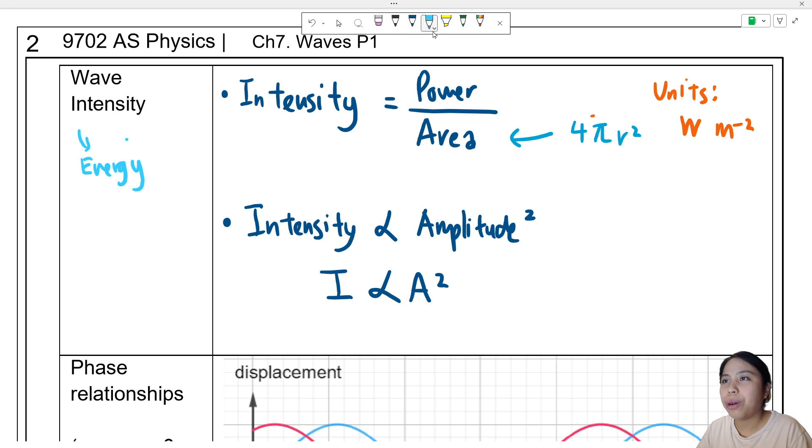So in other words, if we were to compare some waves, this wave has a small amplitude, less intensity. This wave has a big amplitude, so big intensity. This is a small intensity.